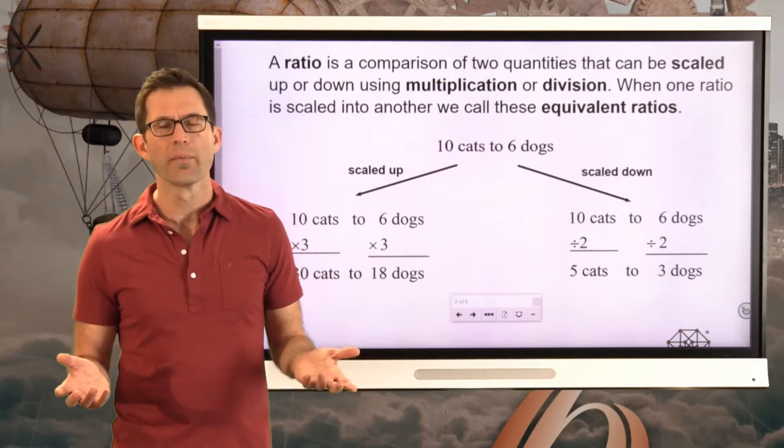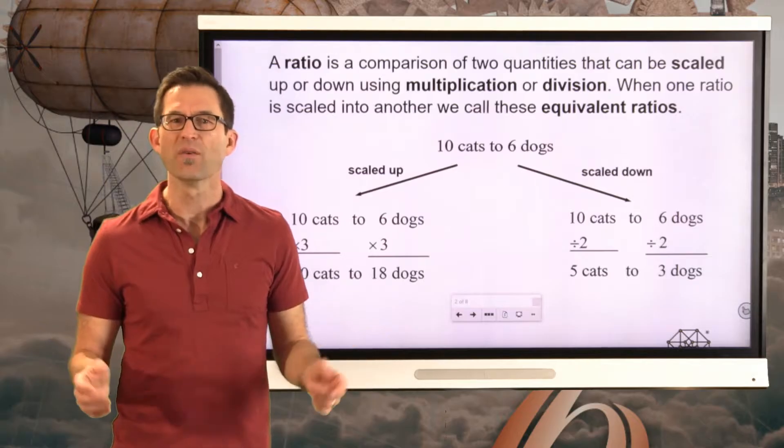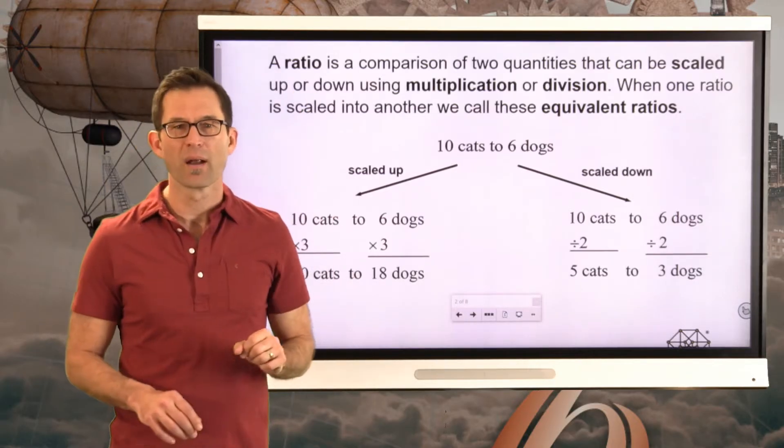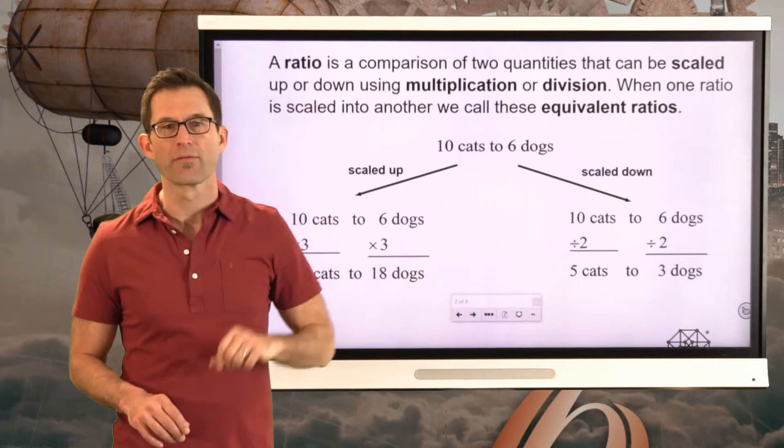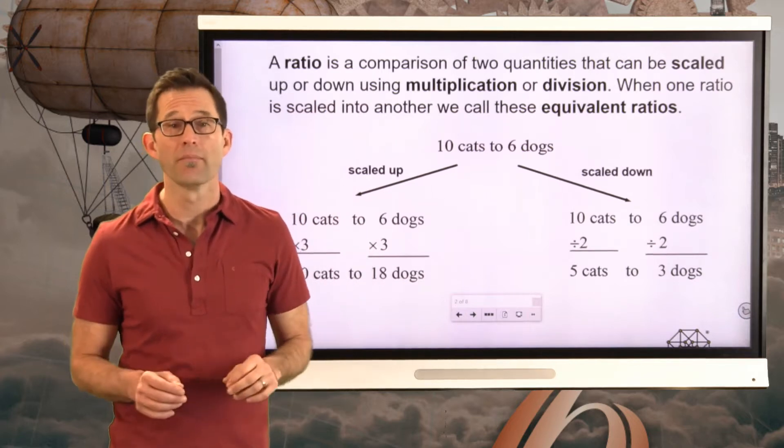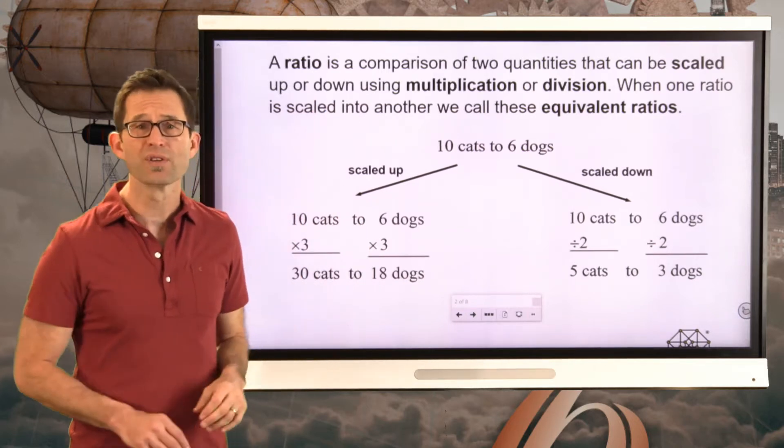Sounds a lot like forming equivalent fractions, right? When you multiply the top and the bottom of the fraction by the same number or when you're simplifying a fraction you're dividing the top and the bottom by the same number. Very similar situation here.